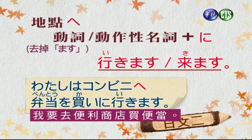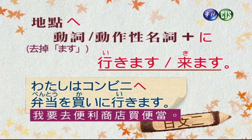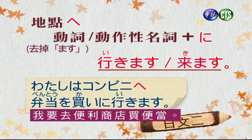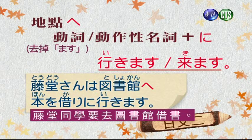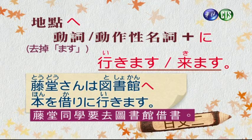私はコンビニへ弁当を買いに行きます（我要去便利商店買便當）。這個コンビニへ用へ，因為搭配後面的行きます這個移動性動詞。藤堂さんは図書館へ本を借りに行きます（藤堂同學要去圖書館借書），所以他去的目的是去借書。